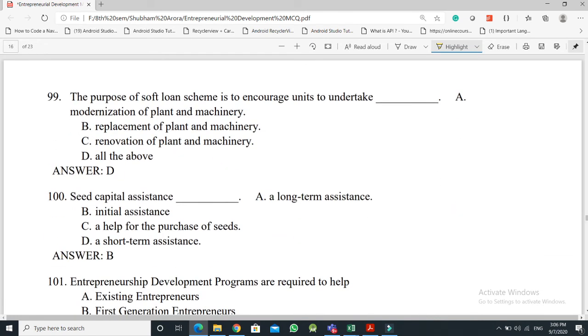Question No. 99: The purpose of soft loan scheme is to encourage units to undertake - the answer is Option D, all of the above. Question No. 100: Seed Capital Assistance - the answer is Option B, Initial Assistance.